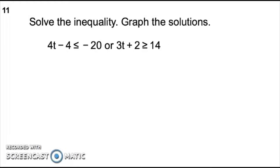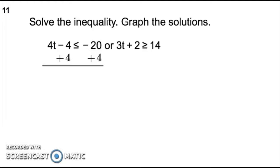Number 11: Solve the inequality and graph the solutions. We have 2 separate inequalities, so we solve them both. Starting with the one on the left, add 4 to both sides to get 4t is less than or equal to negative 16. Divide both sides by 4 and you'll get t is less than or equal to negative 4.